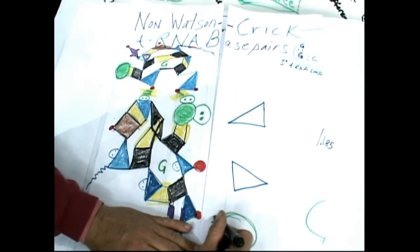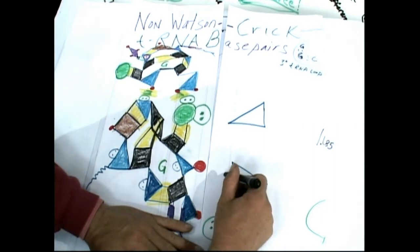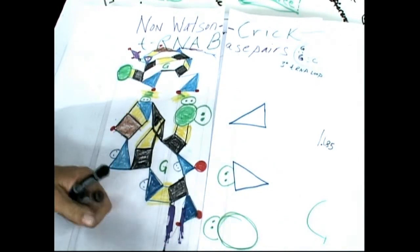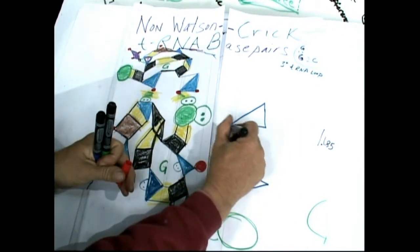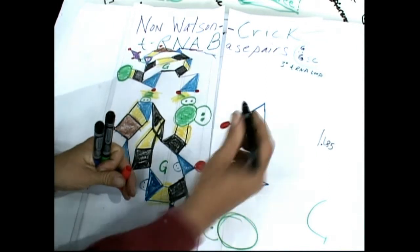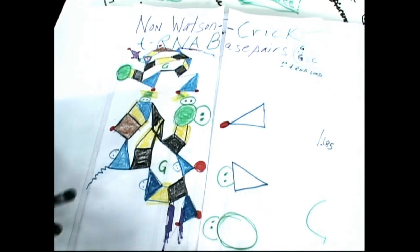Electron pair here. Electron pair here. Already got an electron pair there. So we need... What do we end up with? Let's use the pencil.